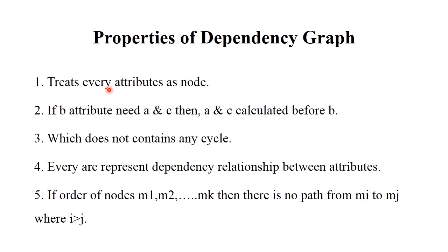There are some properties of a dependency graph. First, it treats every attribute as a node — during tree generation, each node has a particular value. Second, if attribute B needs A and C, then A and C must be calculated before B. This property is useful in programming. Third, the dependency graph does not contain any cycle — whether synthesized or inherited, no attribute depends on itself cyclically. Every arc represents a dependency relationship between attributes.